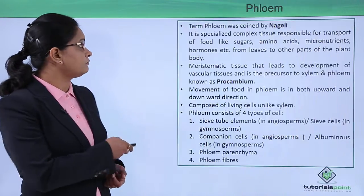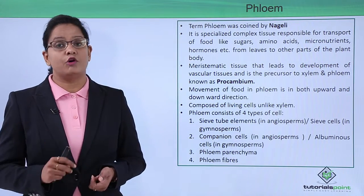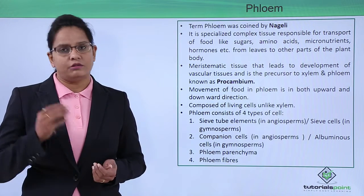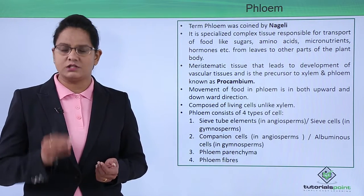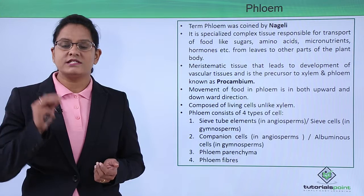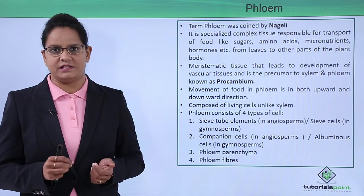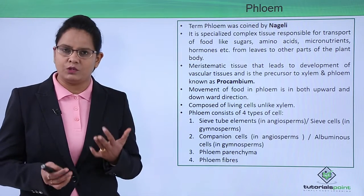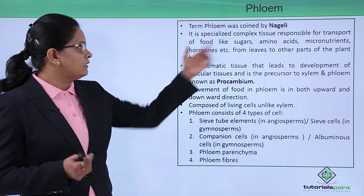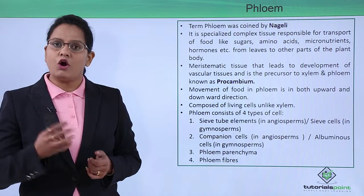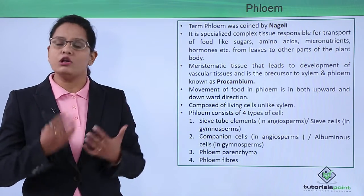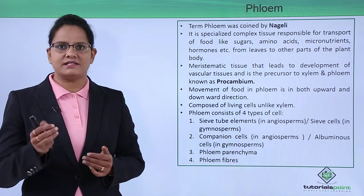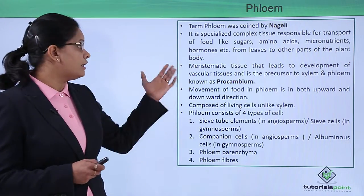The term phloem means 'bast'; it was given by Nageli. The function of phloem tissue is to transport food synthesized by leaves. The food synthesized includes sugars, amino acids, micronutrients, and plant hormones — all of these have to be transported to different parts of the plant, and that is done by phloem tissue.